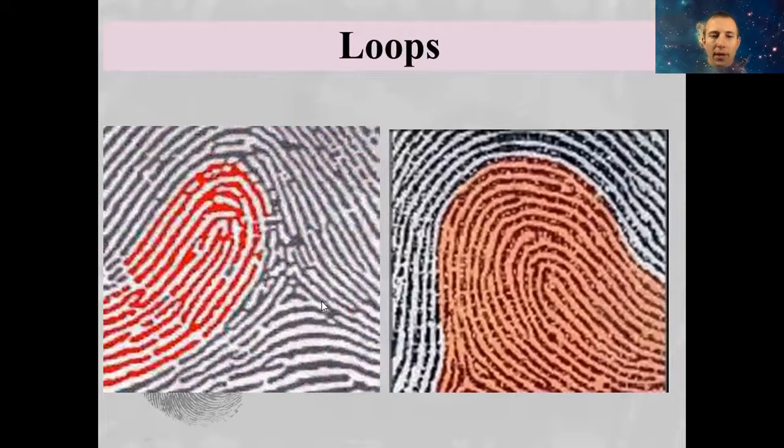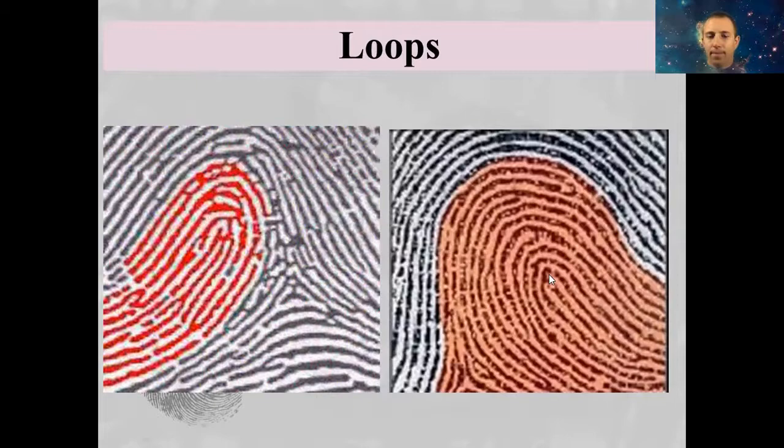Here are some other examples of loops. You can pretty clearly see the core right here and you can see the delta right here. In this other example, the delta is kind of off the screen, but you've got your core right here.